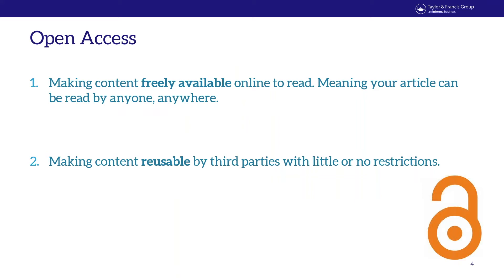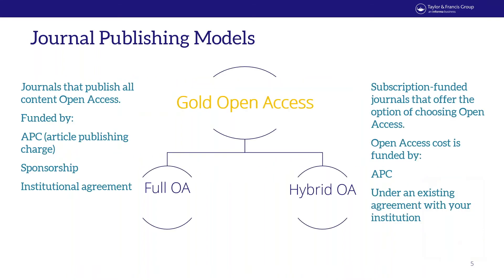Here's an interesting example of the impact of open access publishing. Costas Karageorghis published a review article on music and sport in the International Review of Sport and Exercise in 2011. This paper has been downloaded over 9,000 times, cited in over 40 individual research pieces, featured in the International Business Times, Huffington Post, and The Atlantic, and placed in the top 5% of all research outputs as scored by Altmetrics.